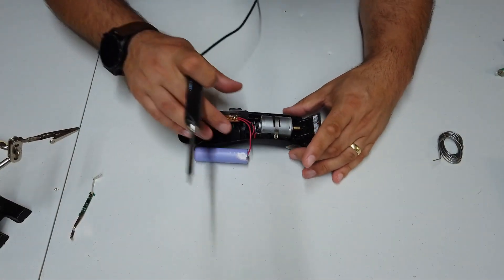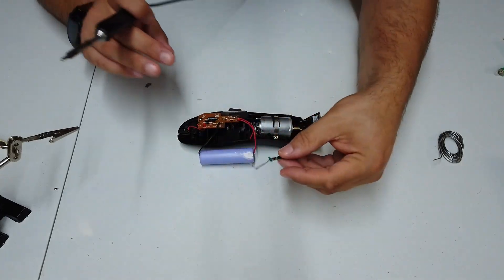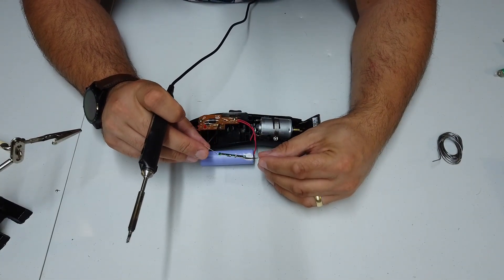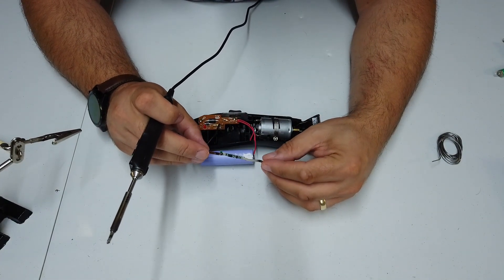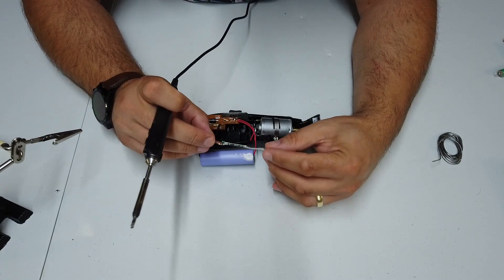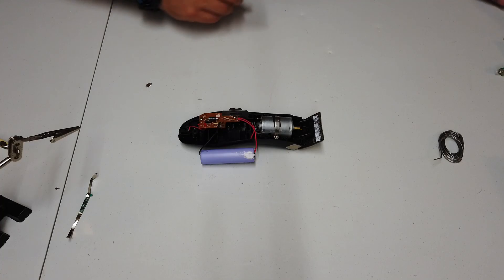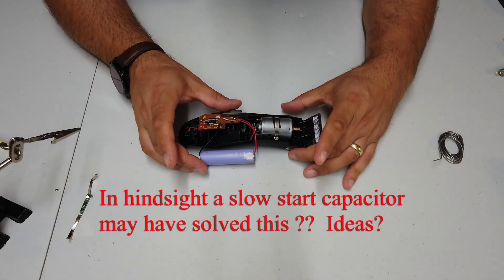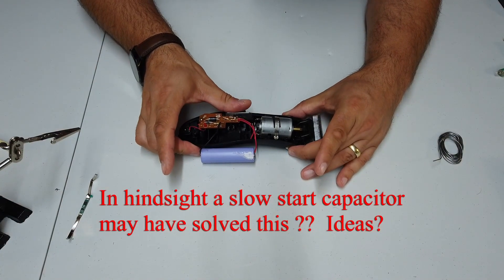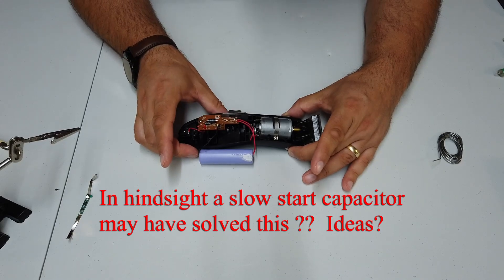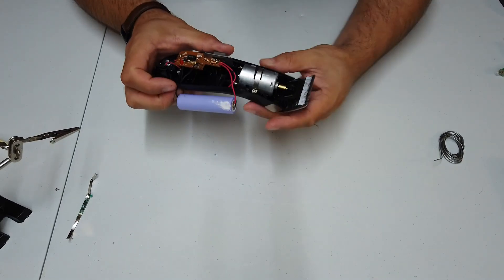Right, so in summary then, because of the inrush current, the charge PCB here couldn't deliver or couldn't handle the inrush current to the motor. So we've had to connect the battery directly to this lot here. Yep, well that works an absolute treat. Look at that.